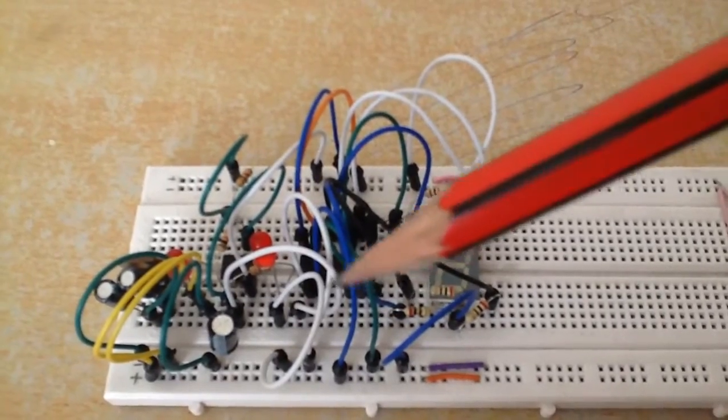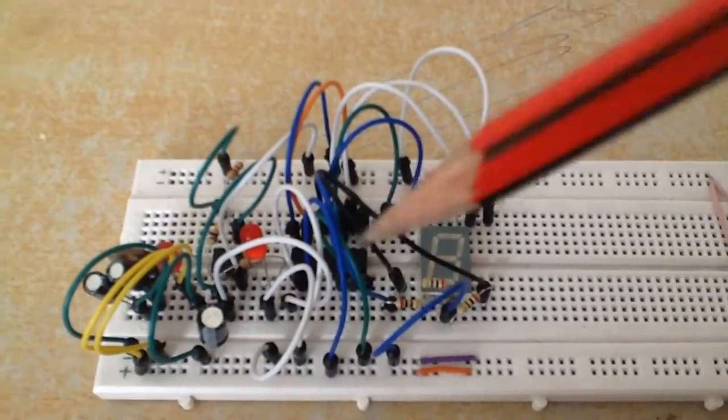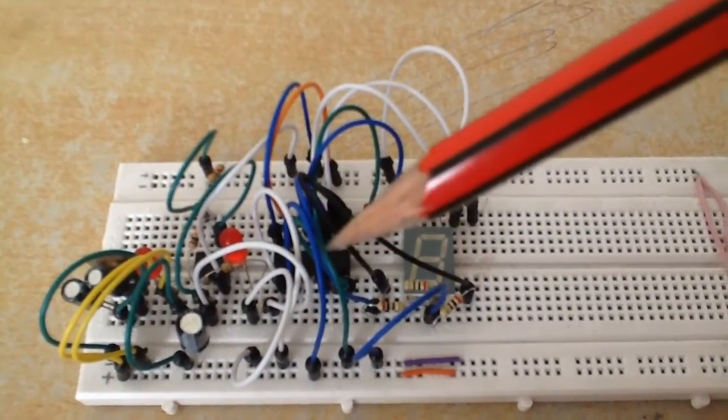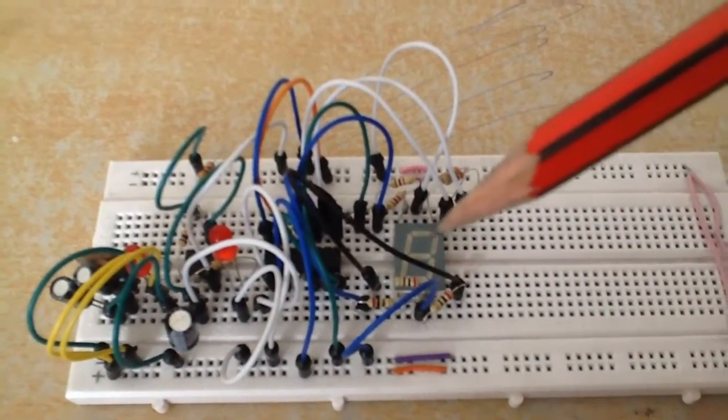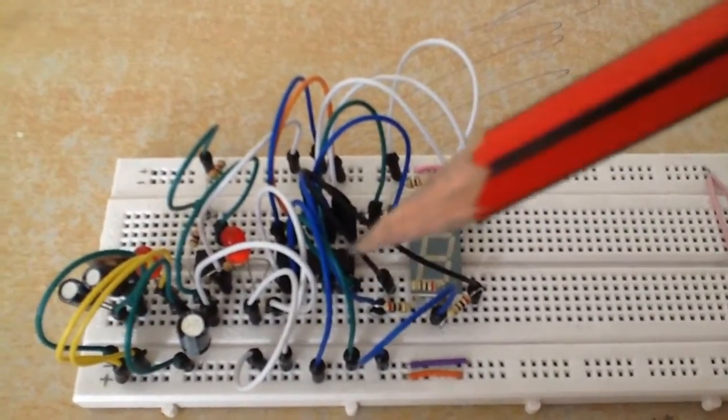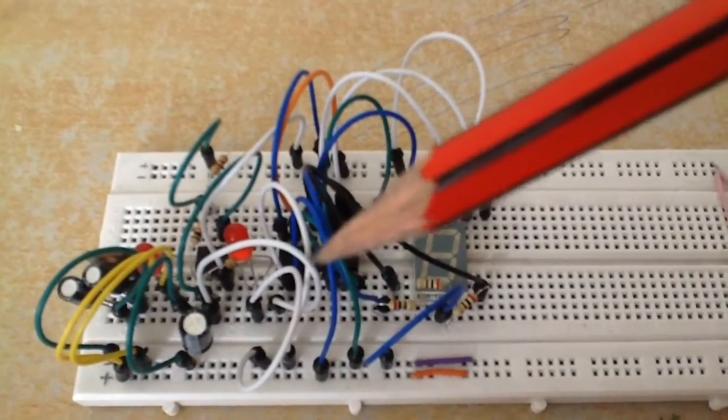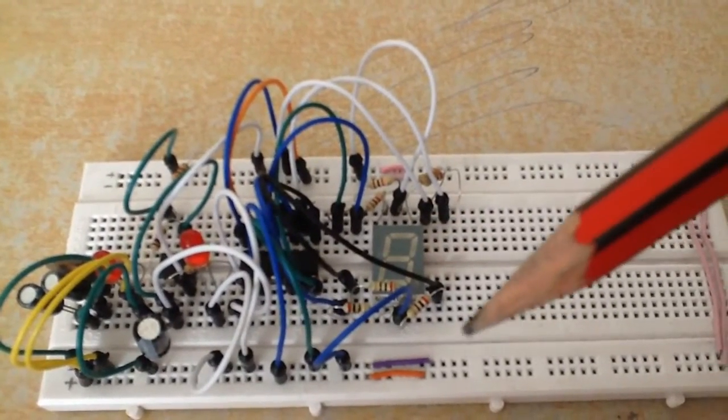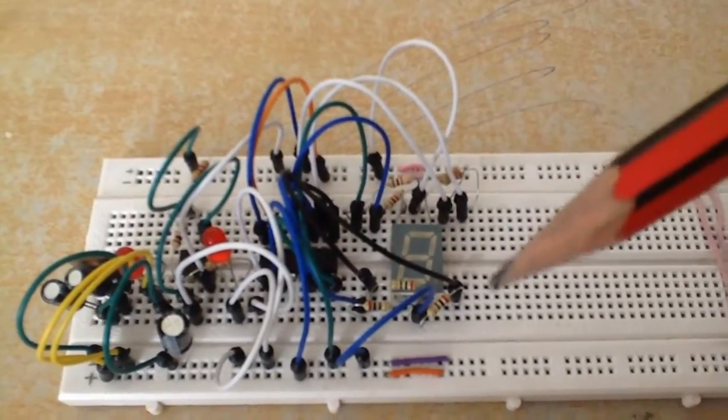You just connect it up from the pin layout that I showed you of the 4026 chip and the 7-segment display. Once again I don't use pin 4, 5, and 14 on the 4026 chip. And on the 7-segment display I don't use pin 5 because that is the full stop. But that is pretty much it.